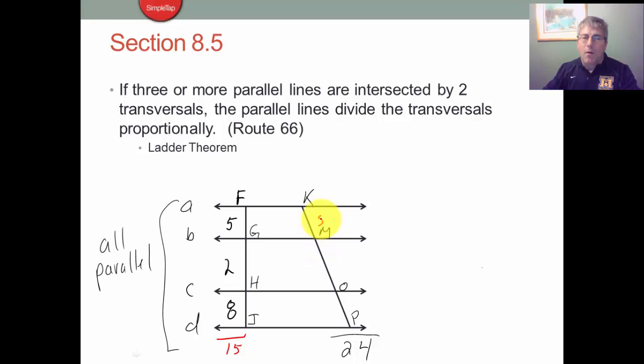But if we know that there's going to be a constant factor, this FG is 5 parts and GH is 2 parts and HJ is 8 parts. So doesn't KM have to be 5 times something and 2 times something and 8 times something?